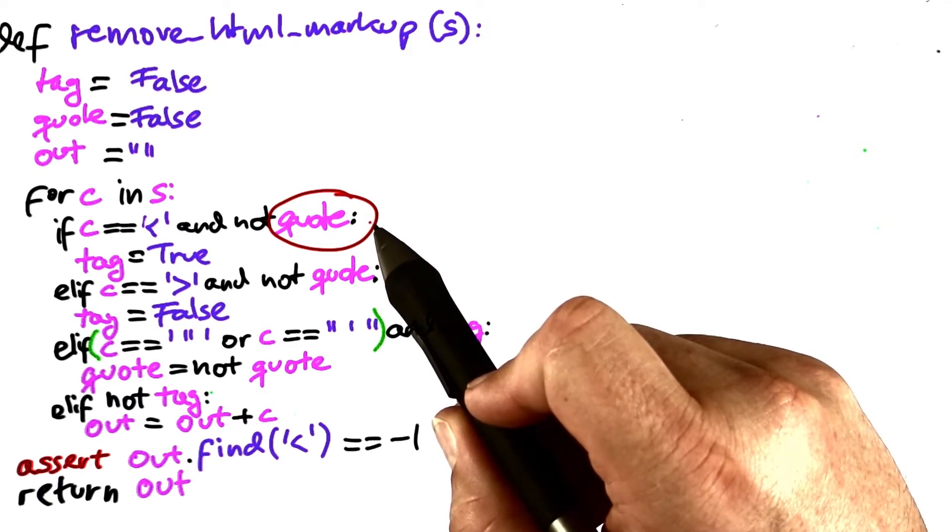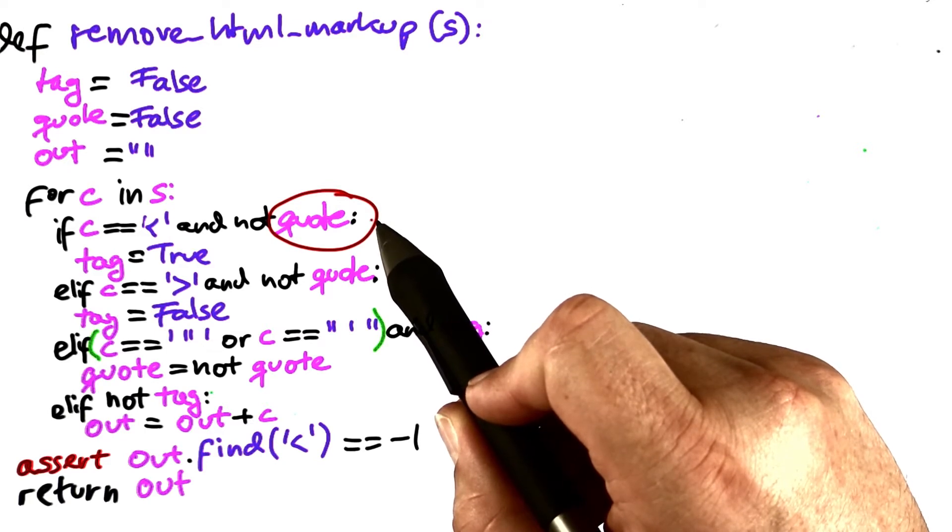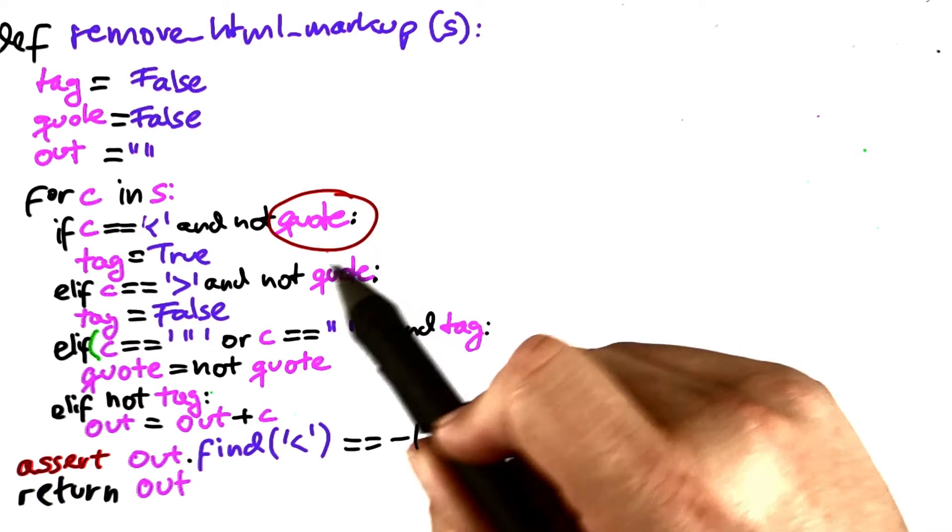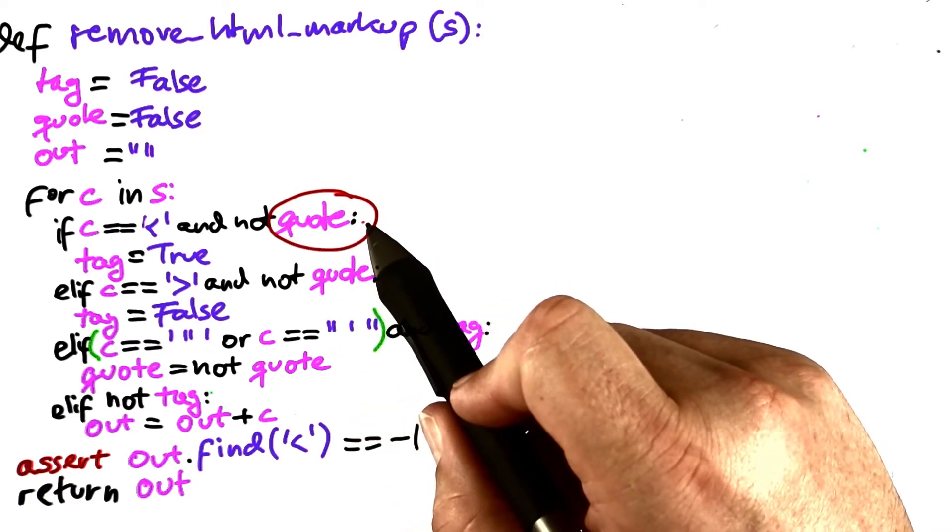To do so, we look at the places where quote would be written and which also would be executed before this statement would be executed.